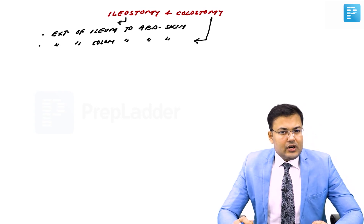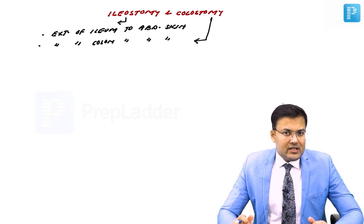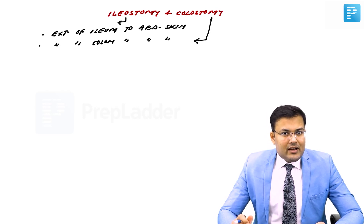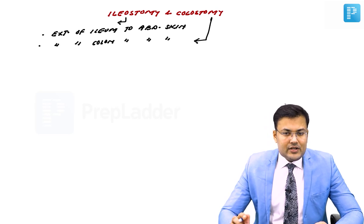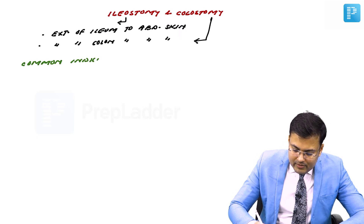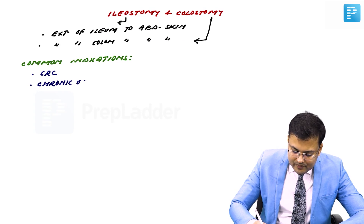What are the common indications of stoma formation — ileostomy and colostomy? You have seen in surgery OTs and surgery ward. The patients who are suffering from colorectal cancer, patients having chronic ulcerative colitis or Crohn's disease — these are the common indications of stoma formation.